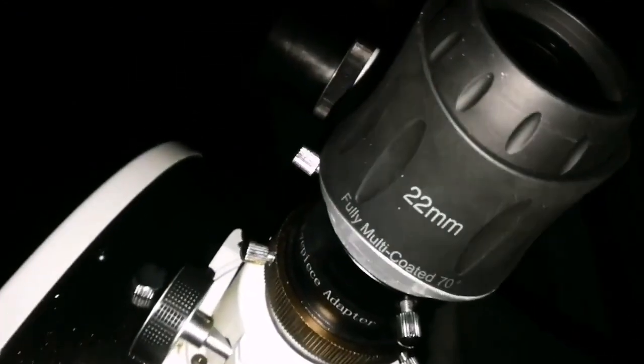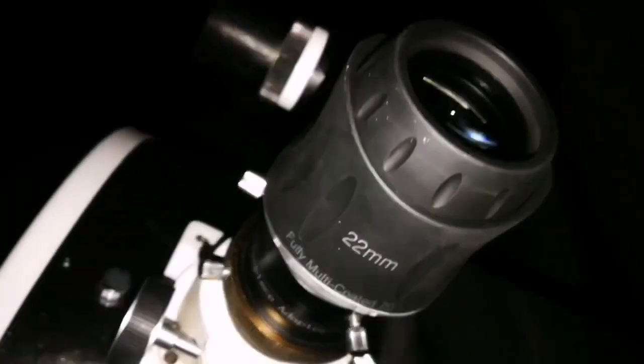This is the Skywatcher SWA 22mm eyepiece. This telescope is a refractor f5 12-inch reflector, Dobsonian.